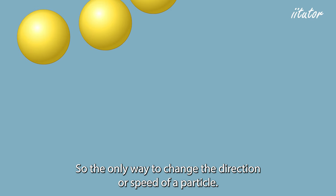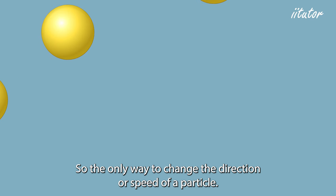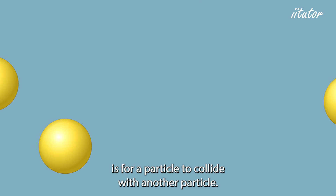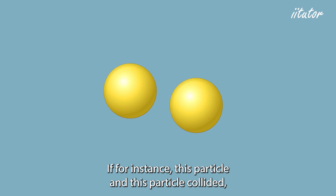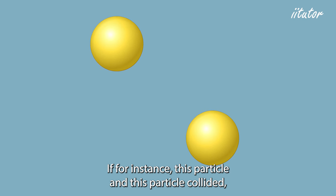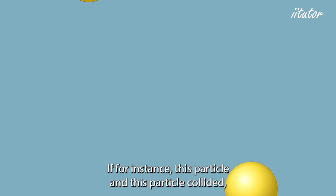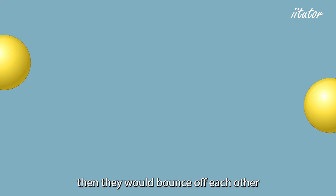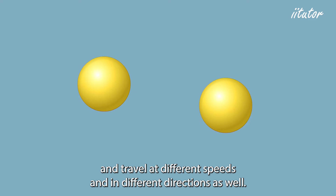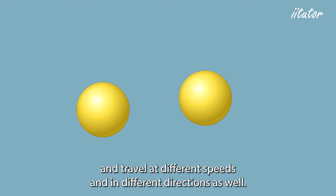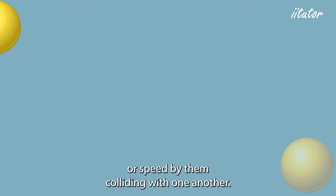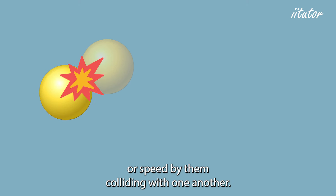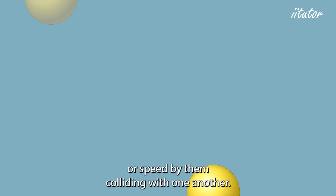The only way to change the direction or speed of a particle is for it to collide with another particle. If this particle and that particle collided, they would bounce off each other and travel at different speeds and in different directions. That's the only way we can change their direction or speed — by them colliding with one another.